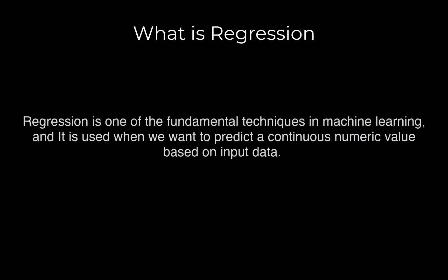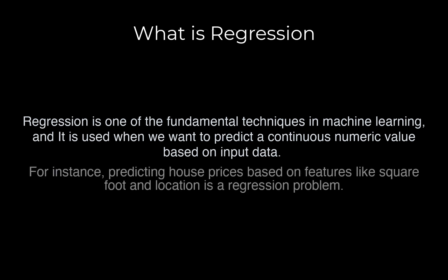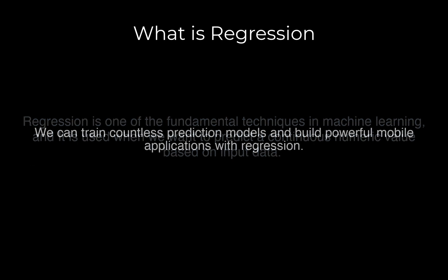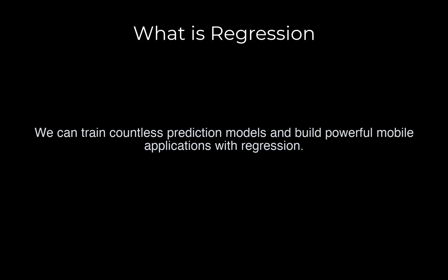Regression is one of the fundamental techniques in machine learning and it is used when we want to predict a continuous numeric value based upon input data. For example, if we want to predict the price of a house based upon features like the area of the house and its location, then it will be called a regression problem. Similarly, we can train countless prediction models and build mobile applications using regression.